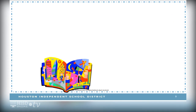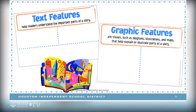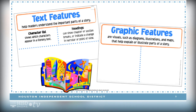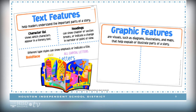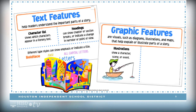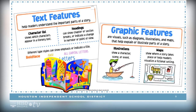The text we are about to read is an informational text that contains many text and graphic features. Text features help readers understand the important parts of a text. Examples include character lists, headings that show chapter or section breaks, and different type styles that show emphasis or indicate a title. Graphic features are visuals such as diagrams, illustrations, and maps that help readers explain or illustrate parts of the text, including illustrations that show a character or scene, and maps that show where a story takes place.